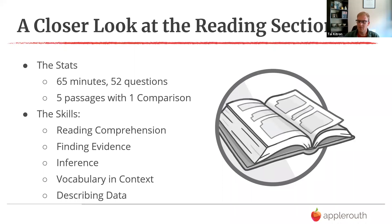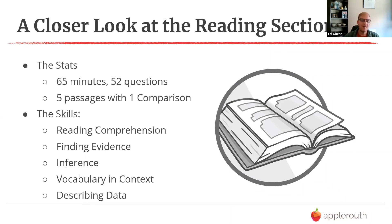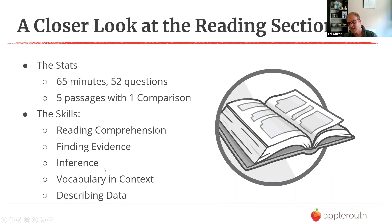65 minutes for 52 questions is a much slower pace than ACT. Out of the five passages, one will be a comparison passage — passage A and B — with questions at the end to compare them. Skills tested include comprehension, finding evidence, inference, vocabulary (which comes up a couple times per passage), and describing data from graphs. In sessions we work on making notes in the margins, eliminating intentionally wrong answer choices, and knowing when to make an inference versus relying on objective evidence.